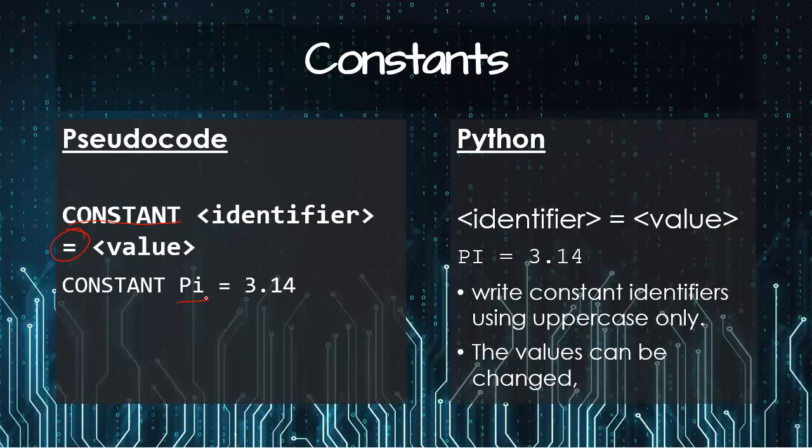And in Python is the same as with the variable: pi is equal to 3.14. But the difference of a constant from a variable in Python is that you use the uppercase. The variables, you can use the lowercase, you can use the camel case, but for the constant, it has to be all caps. So that way it will know that this is a constant number. The values can be changed, but of course it is not recommended to do because that is the purpose of a constant. You don't change the value.